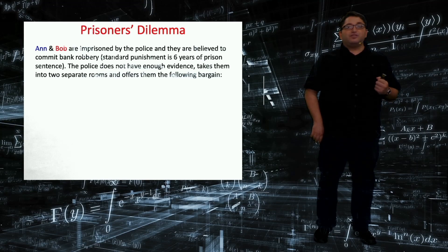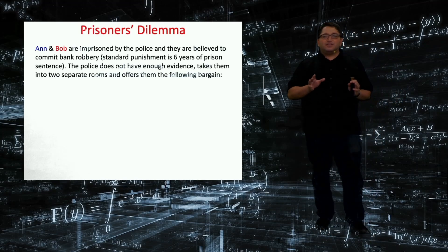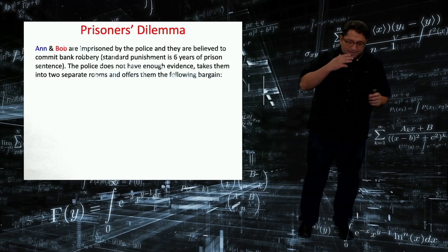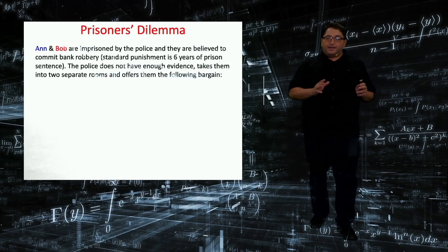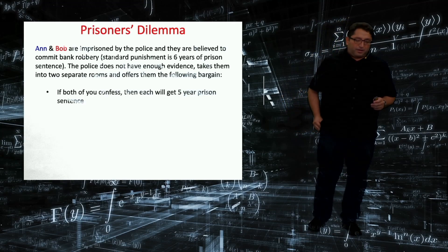He would like to give some reduction in the sentence if you confess your crime. And in order to get confession as an outcome, the police does the following: He takes the two suspects, Ann and Bob, in two separate rooms and gives the following bargain.